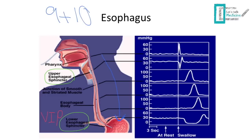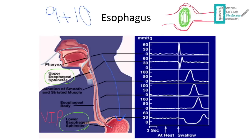If the primary peristaltic wave from the upper esophageal sphincter doesn't happen for some reason, we have the secondary peristaltic wave. This means that if there's food distending the esophageal muscle, the GI muscles react to distension by contracting, pushing the food forward. This secondary peristaltic wave only happens when the primary does not work.